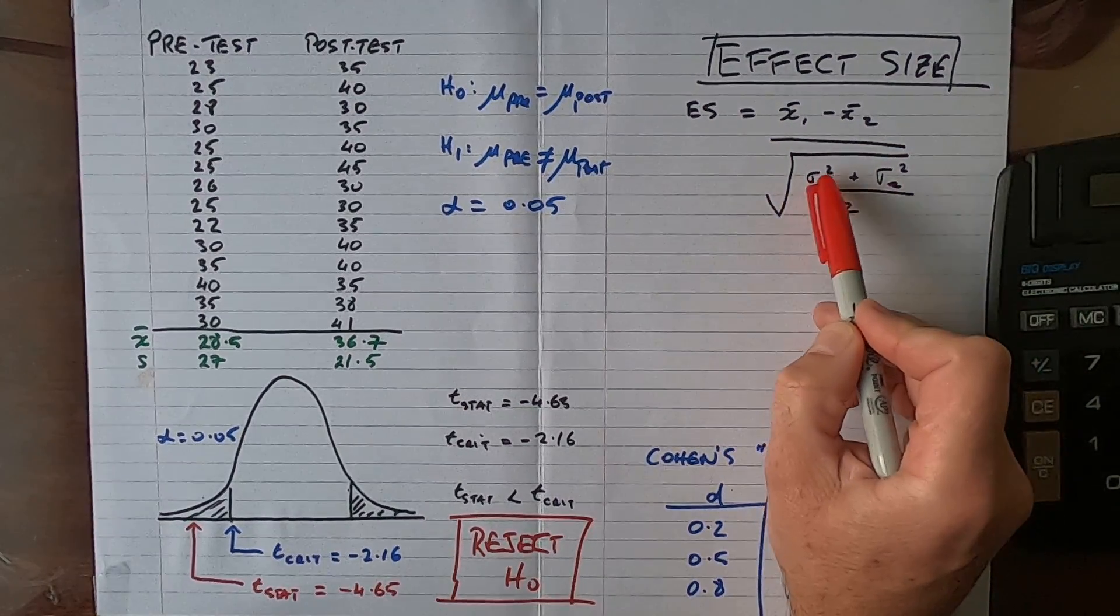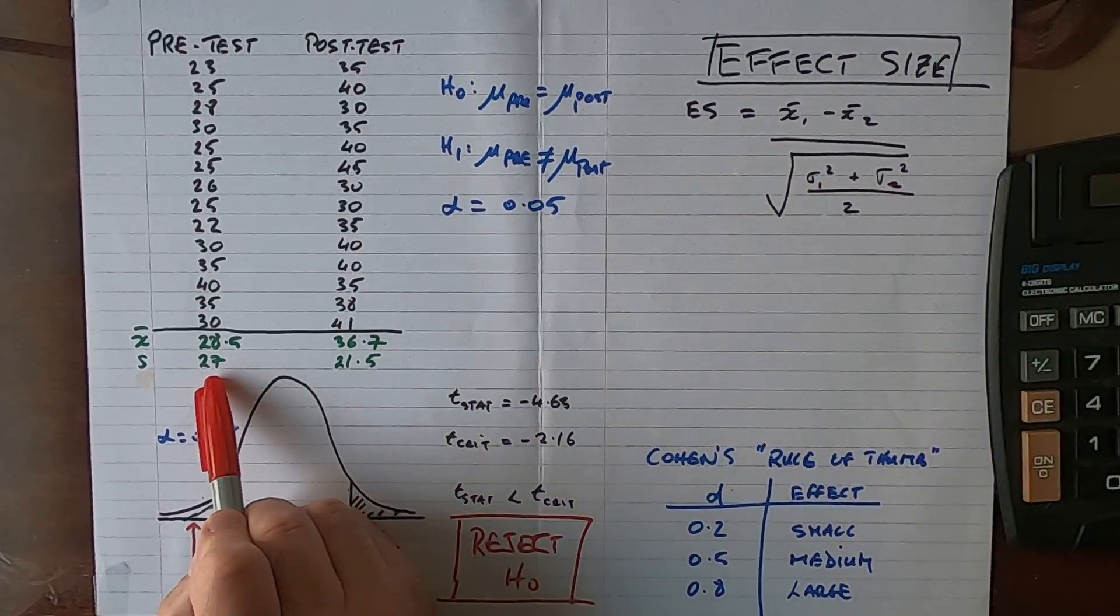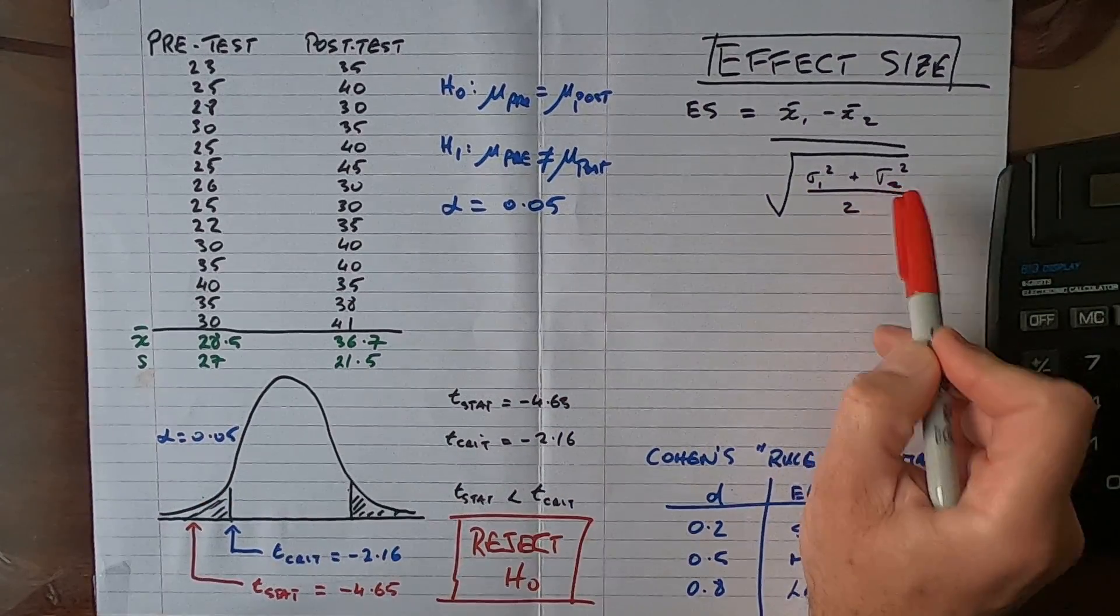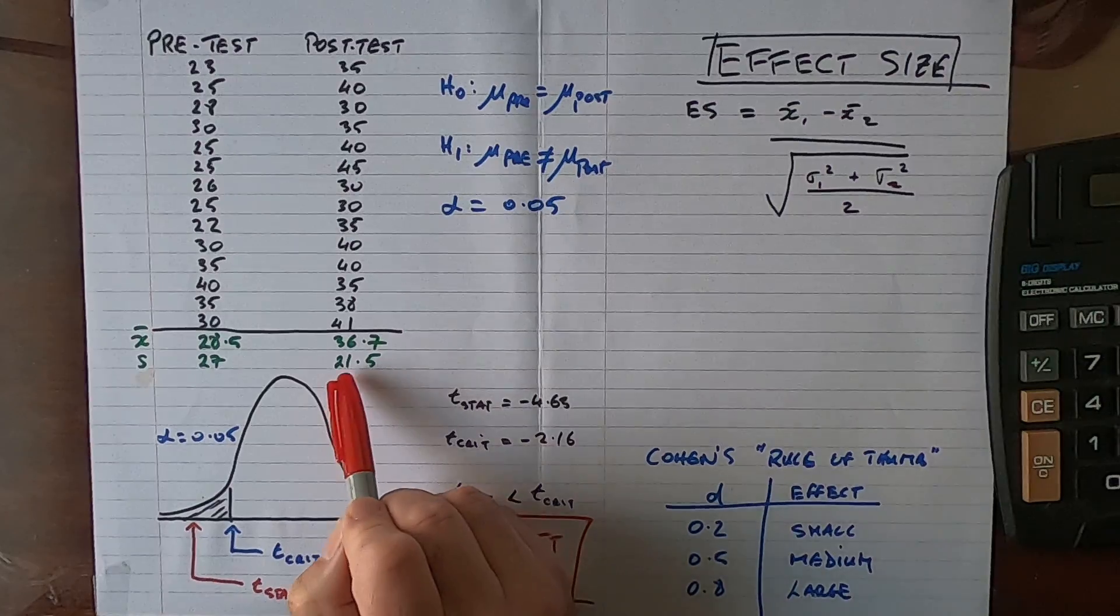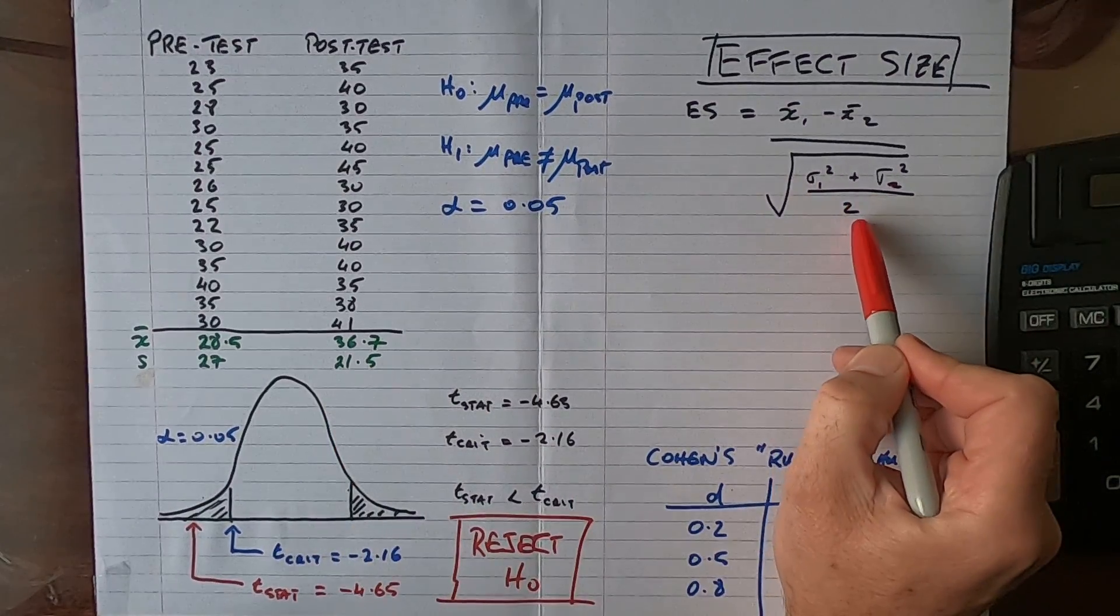Then we divide that by the square root, and we're going to use the two variances here. Sigma squared 1 is the variance for group 1, which is 27, and sigma squared 2 is the variance for group 2, which is 21.5. We add those together and divide by 2.